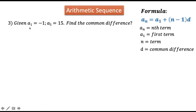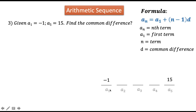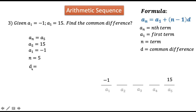Lastly, given a sub 1 equals negative 1 and a sub 5 equals 15, find the common difference. We cannot find it directly without knowing consecutive terms, but it is possible. Step 1: lay down the given. Our a sub n is a sub 5, which equals 15. Our a sub 1 is negative 1. Our n is 5 because we have 5 terms. And we are solving for the common difference d.